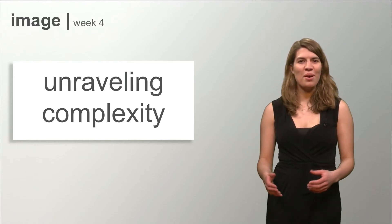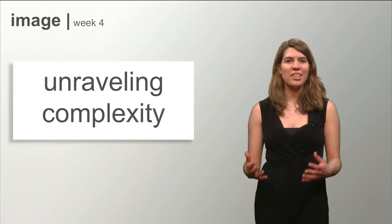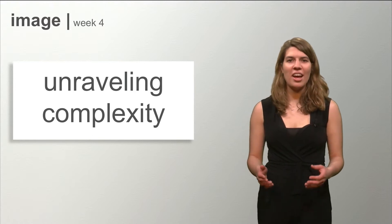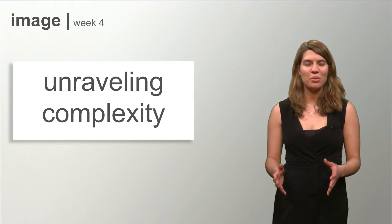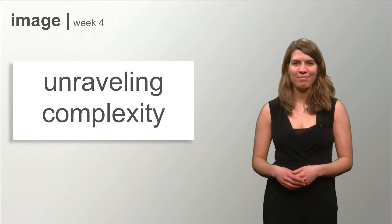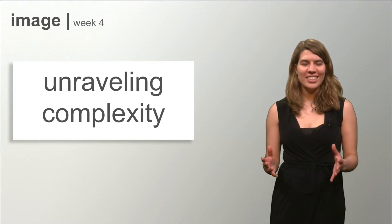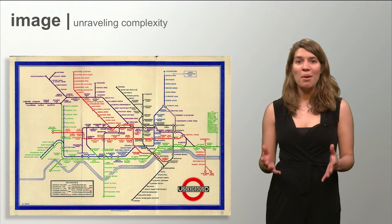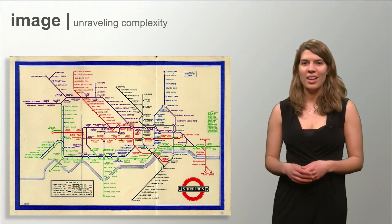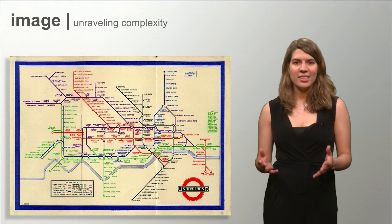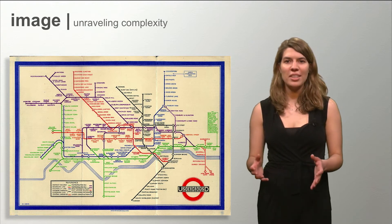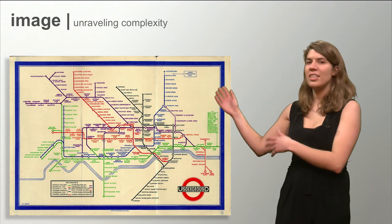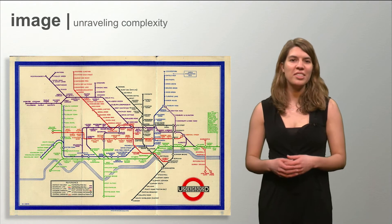Welcome back in week 4. My name is Sanne. This week is about unravelling complexity and how to visualize complex situations in a clear way. Complexity is a phenomenon which we are facing daily, for example the London Underground, a complex system which has been represented by different sorts of maps. Here you can see the original map from 1931.